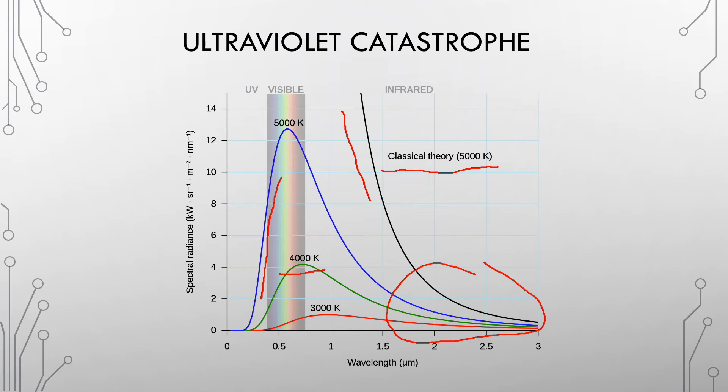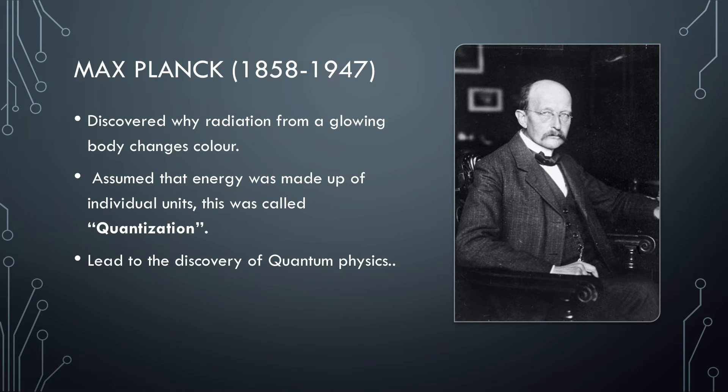Then came along a physicist named Max Planck who solved this problem by introducing a theory and an idea called quantization. Max Planck, who was a German physicist, discovered many things. One of the things he discovered was why radiation from a glowing body changes color.